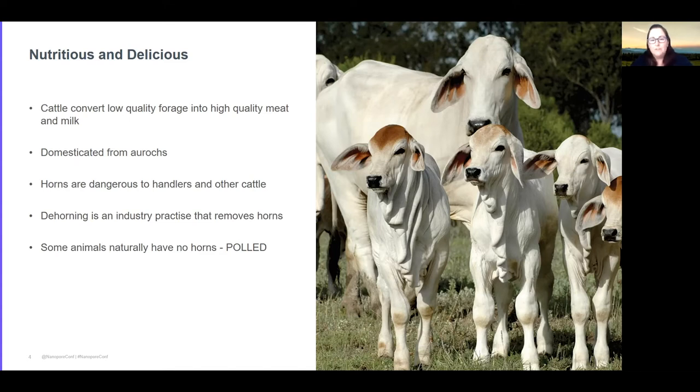Something that's very notable is that there is a natural genetic mutation that confers the lack of horns, and so what you have is these animals that phenotypically just don't grow horns and they're termed polled animals.